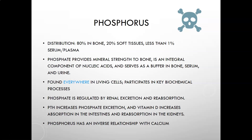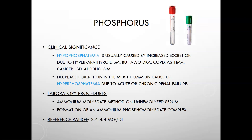Phosphorus has an inverse relationship with calcium — as parathyroid hormone increases phosphate excretion, it causes calcium reabsorption and release; so if phosphorus goes down, calcium goes up, and vice versa. Clinically, hypophosphatemia is usually caused by increased excretion due to hyperparathyroidism, but can also be seen in diabetic ketoacidosis, COPD (such as emphysema and chronic bronchitis), asthma, cancer, irritable bowel disease, and alcoholism.